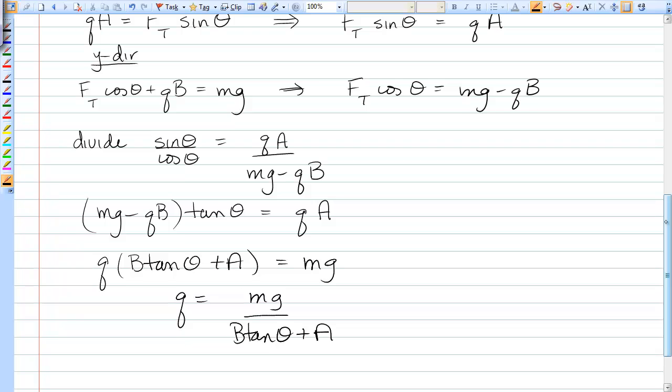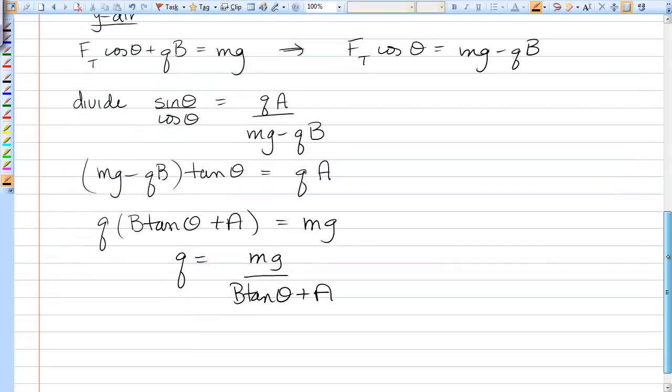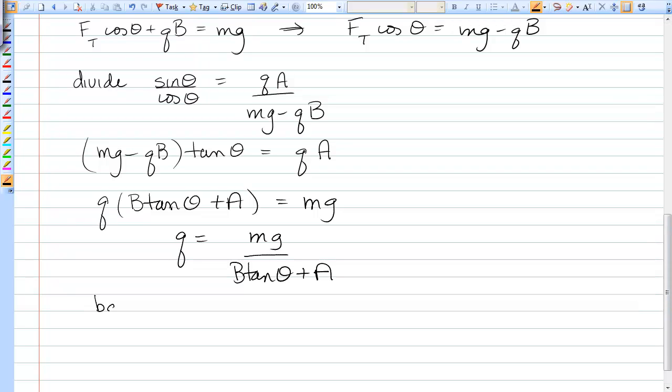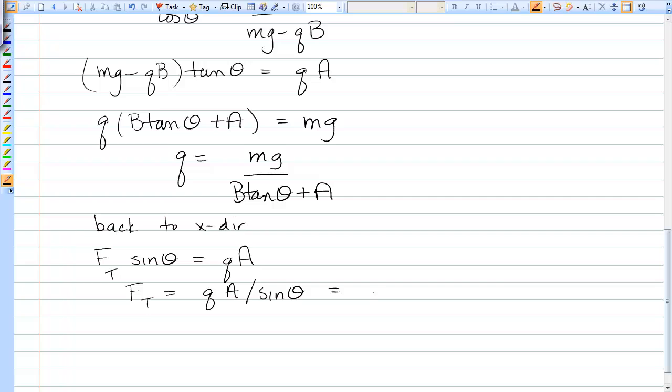Now we'll go back to the X direction equation to find Ft, because that's the simplest one. So back to the X direction, and we had that Ft sine theta was equal to QA. And so Ft is equal to QA divided by sine theta. So subbing in Q, I have mgA over sine theta times B tangent theta plus A.